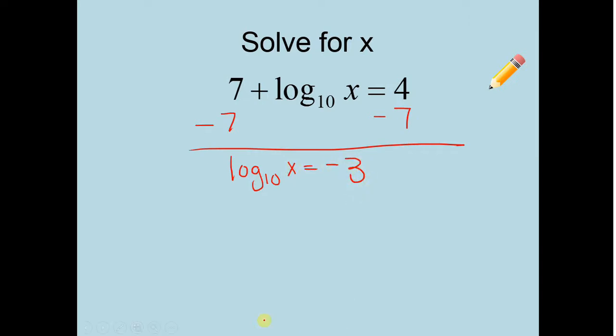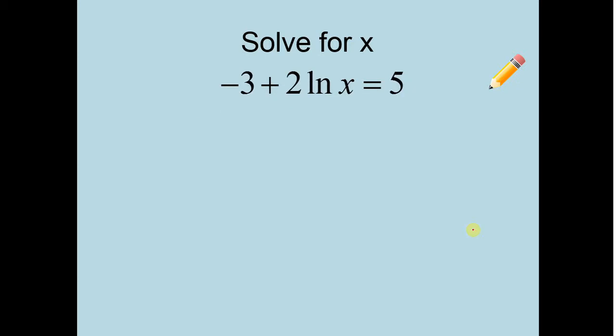4 minus 7. That's negative 3. So now I can't get to that x. So we need to convert to the other form. So I'm going to go 10 to the negative 3 equals x. So x has to be equal to 0.001 roughly. And that one also checks out if you plug it into your calculator. So what about a natural log? Don't be too worried about this. Same idea. So very first thing, let's get rid of this plus 3. So I'm going to add 3 to both sides.